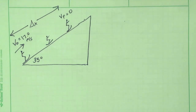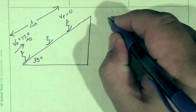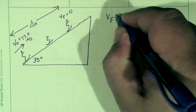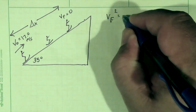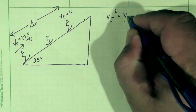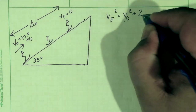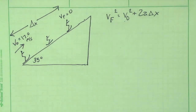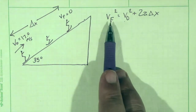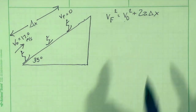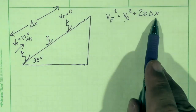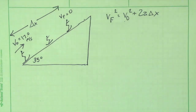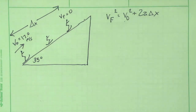This once again seems like a situation where we will be applying the kinematics equation, where we know the final and initial velocities. We want to find delta x, and we must first find the acceleration using Newton's second law.